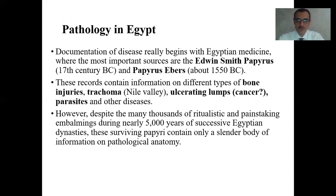In the first part of my lecture, I will explain the brief history of pathology. Like human anatomy, pathological anatomy also has a great history. The documentation of pathology really begins with Egyptian medicine, where the most important sources are the Edwin Smith Papyrus and Papyrus Ebert, about 1550 BC. These records contain information on different types of bone injuries, trachoma, ulcerating lungs, probably cancer, parasites and other diseases.